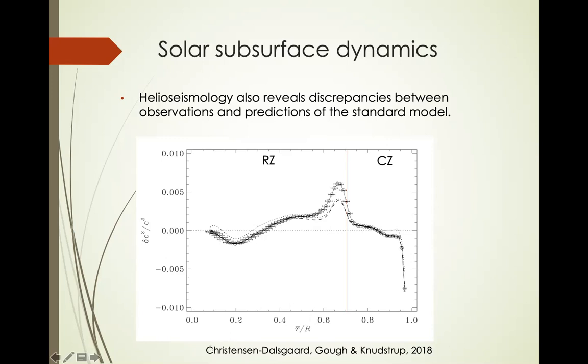More interestingly, helioseismology can measure the sound speed in the sun as a function of radius. The models are not doing well in the region of the tachocline. The quantity delta c squared — the difference between model and observations divided by the model sound speed squared — shows a bump below the base of the convection zone. This is now thought to be missing physics in the solar model.